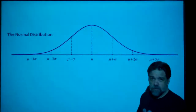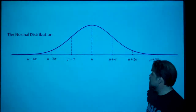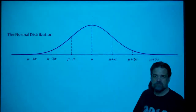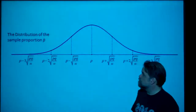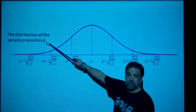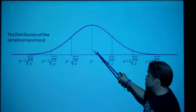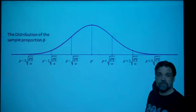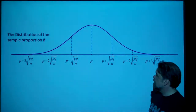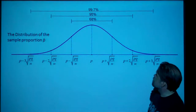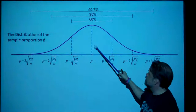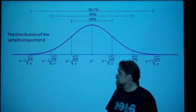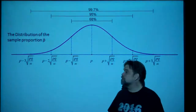Let's start by remembering what we already know. This is what a normal distribution looks like. It's centered around the mean mu, here's one standard deviation away, and here's two standard deviations away. Last time we found that the distribution of the sample proportion p-hat is normally distributed, centered at p, and the standard deviation of p-hat is the square root of p-q over n. We also know that 68% of our data fall within one standard deviation of the mean, 95% within about two standard deviations, and 99.7% within about three standard deviations. This is also true with our sample proportion p-hat.